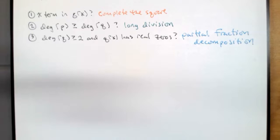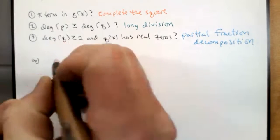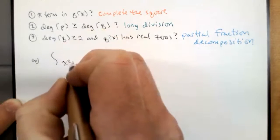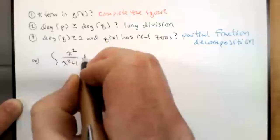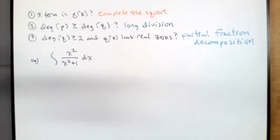Today we want to focus on the case where the degree of the numerator is greater than or equal to the degree of the denominator. We talked a little about how long division works yesterday. Here's the situation: the degree of the numerator is greater than or equal to that of the denominator, so this does not fit our degree 0 over degree 2 or degree 1 over degree 2 forms. Algebra says: use long division to rewrite this.